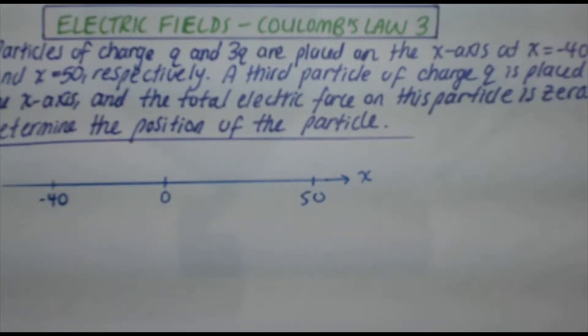Hello and welcome back to another Coulomb's Law problem. Particles of charge q and 3q are placed on the x-axis at x equals minus 40 and x equals 50 respectively. A third particle of charge q is placed on the x-axis and the total electric force on this particle is zero. Determine the position of the particle.